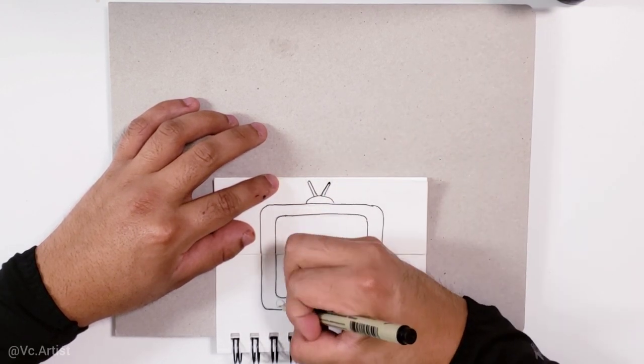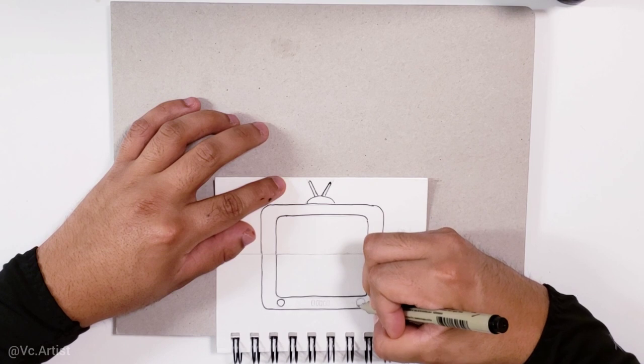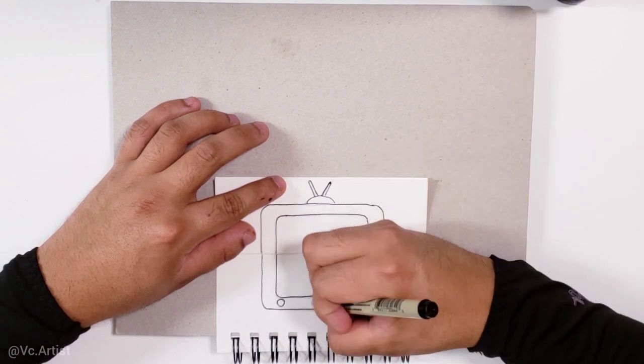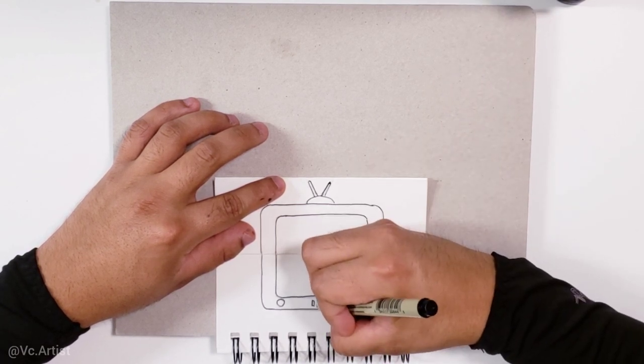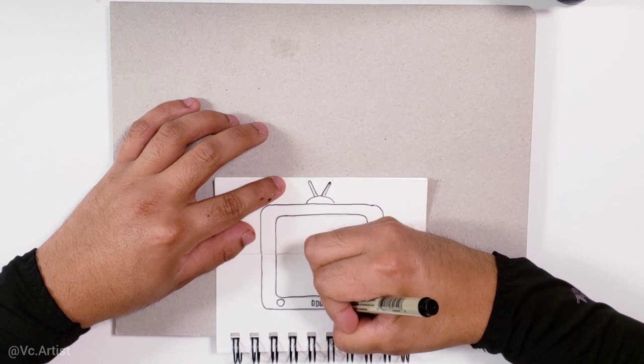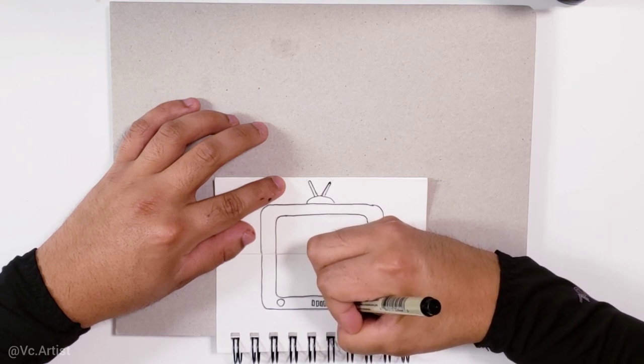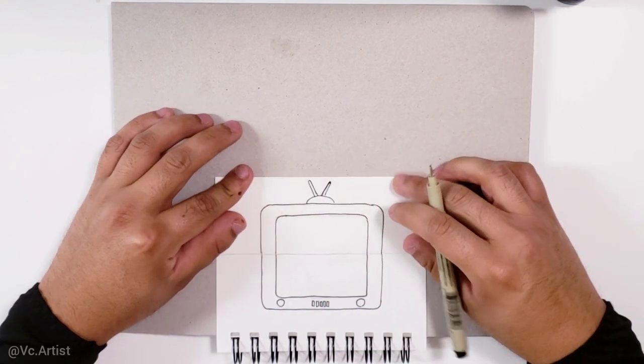And at the bottom, we are going to draw just a few details, like the buttons and stuff. For example, the on button, this one is going to be for the channel, this is the plus, the negative, and the volume too, and the one for the settings.